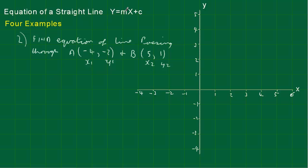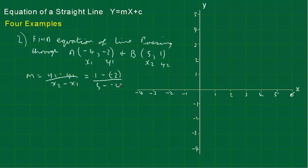The first thing we find is the gradient m, given by m equals y2 minus y1 over x2 minus x1. Putting the numbers in: y2 is 1, minus a minus 2 for y1, over x2 minus x1, which is 5 minus a minus 4. Well 1 minus a minus 2 is 3, and 5 minus a minus 4 is 5 plus 4 which is 9. So our gradient m is a third.